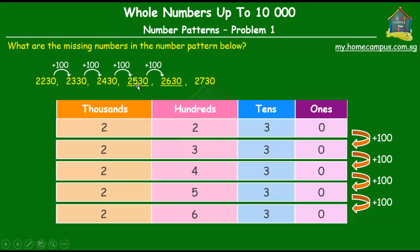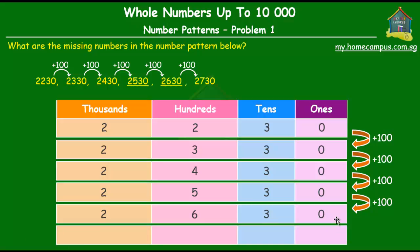So we've got the two missing numbers, but just to have one last check to make sure that we didn't miss anything. We must also check that the last number that's given to us, which is 2730, also follows the same rule. So let's just check that indeed, if we added 100 to 2630, did we get 2730? Well, yeah, we do. So there you go, the missing numbers are 2530 and 2630.